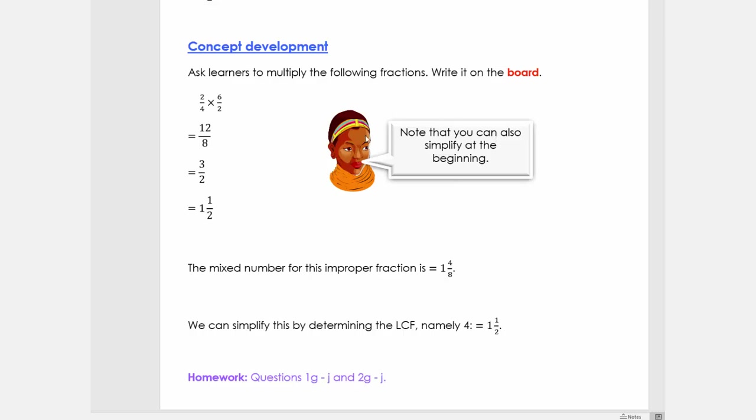Please look at this note that we can also simplify these fractions at the beginning and then multiply them. So I can say what goes into 2 and 4? It's 2. So I divide 2 by 2, it's 1, and then 4 by 2, it's 2. So I have 1/2 here. I can also divide it by 2, so 2 divided by 2 is 1 and 6 divided by 2 is 3. So if I then multiply those two simplified fractions, I get 3/2.